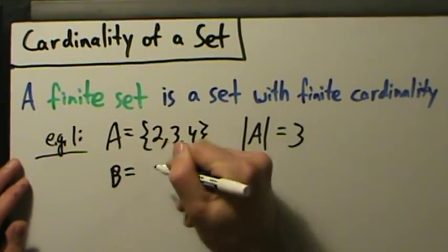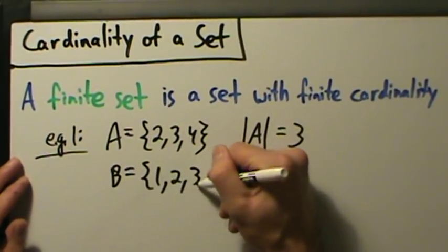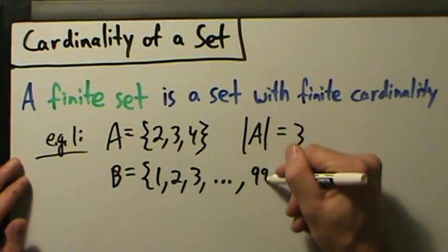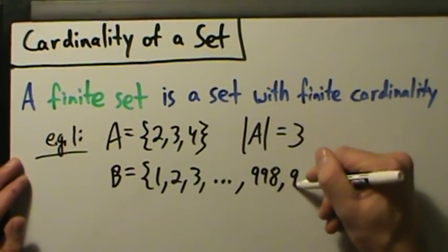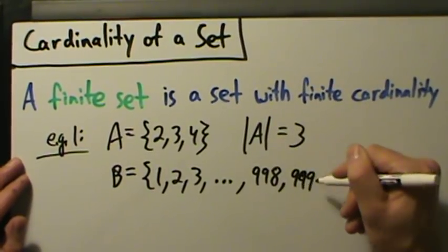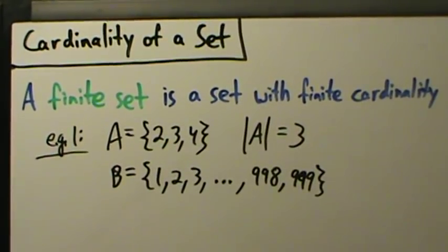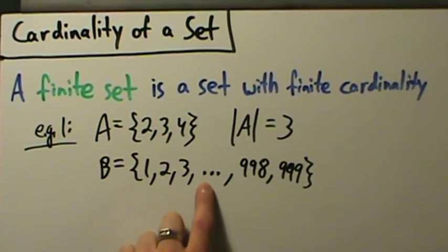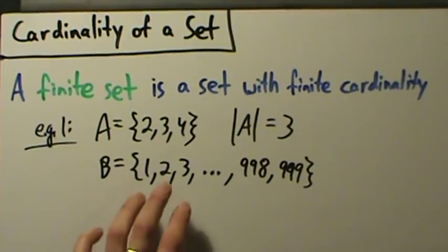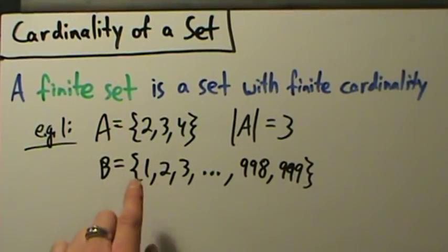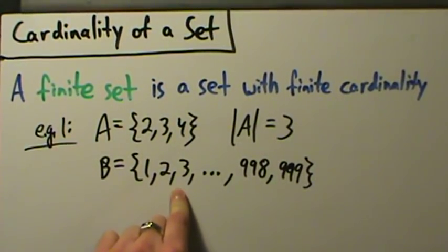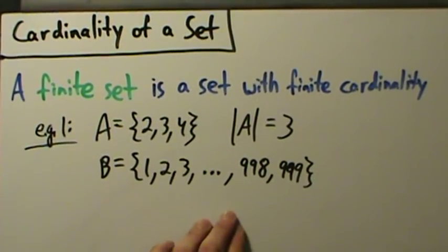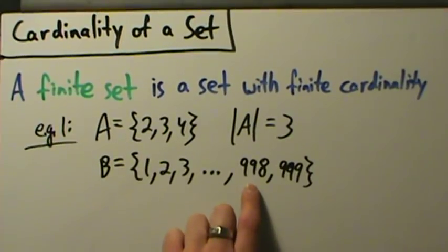How about B = {1, 2, 3, ..., 998, 999}? The dot-dot-dot means continue the pattern established by the first three numbers. So 1, 2, 3 — the next is 4, then 5, 6, 7, 8, and so on all the way up to 998, 999.